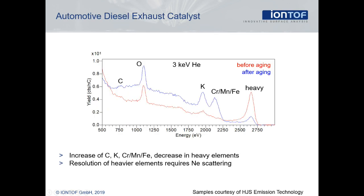An example of a typical LEIS analysis is one of automotive catalysts. Here the spectra shows the comparison between a fresh and an aged catalyst. Specifically, the 3kV helium overview spectra before aging show some remaining carbon and oxygen, which is expected, as well as some heavier elements. After the aging, potassium and chrome, manganese, and iron are strongly increased, and also some heavier elements are present which cannot be identified under these conditions.